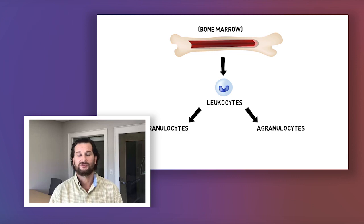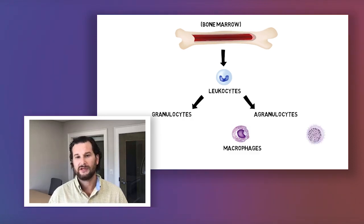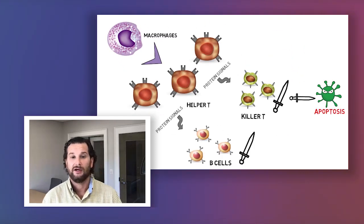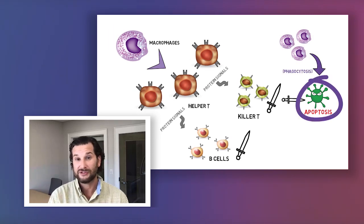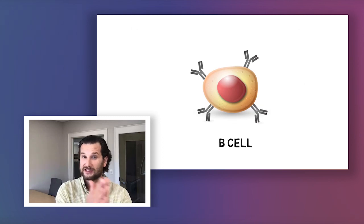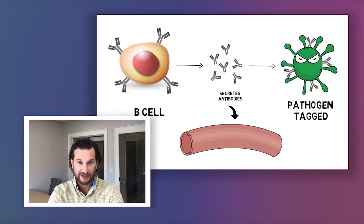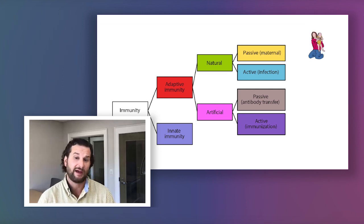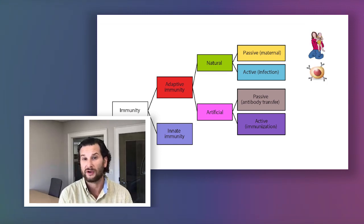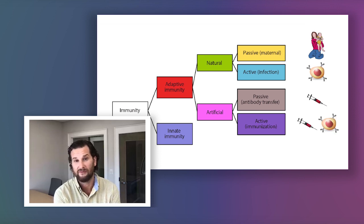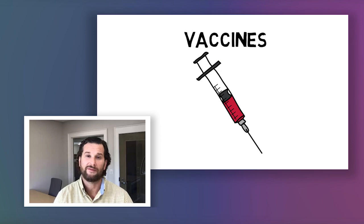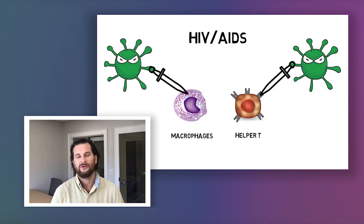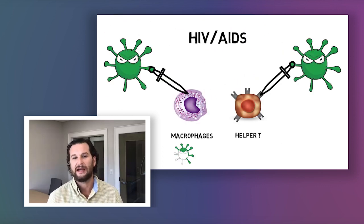The lymphatic system: know the key players — the spleen, tonsils, adenoids, appendix, and thymus gland. Know the two types of lymphocytes: B cells and T cells. Know about killer T cells killing host cells. Know the types of immunity: natural passive, natural active, artificial passive, and artificial active. Vaccinations are part of the lymphatic system — know their purpose. Know some diseases and disorders like lupus, type 1 diabetes, and rheumatoid arthritis.